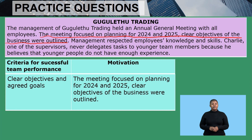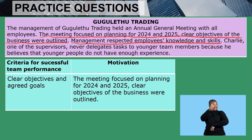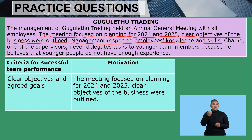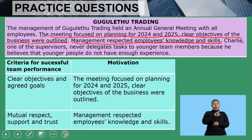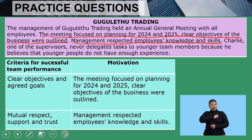Management respected employees' knowledge and skills. We are going to come back to this one: Charlie, one of the supervisors, never delegates tasks to younger team members because he believes that younger people do not have enough experience. The sentence 'management respected employees' knowledge and skills' has to do with mutual trust, respect, as well as support. Do not forget that you have to quote the sentence from the beginning up until the end so you do not lose marks. So the second criterion is mutual respect, support and trust — then quote the full sentence.